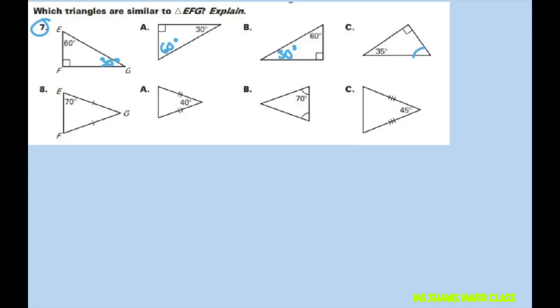This one's not going to match up, so this one's not similar. Therefore, the only two triangles that are similar are angle A and B.